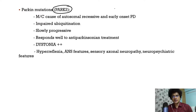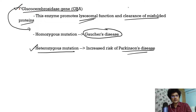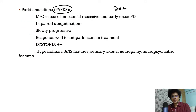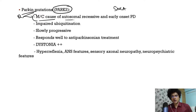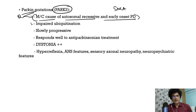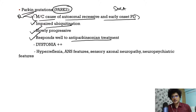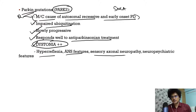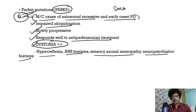PARK2 is a Parkin mutation — the most common cause of both autosomal recessive and early-onset Parkinson's disease. It is caused by impaired ubiquitination, is slowly progressive, and responds well to anti-Parkinson's treatment. Features include prominent dystonia, hyperreflexia, autonomic dysfunction, sensory axonal neuropathy, and neuropsychiatric features. Remember: PARK2 is the most common cause of autosomal recessive and early-onset Parkinson's.